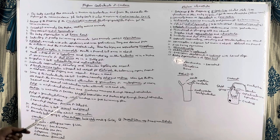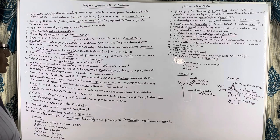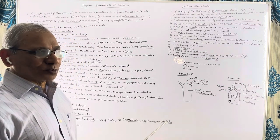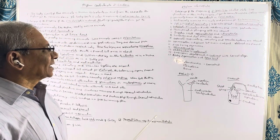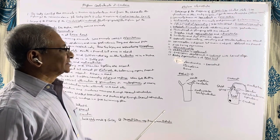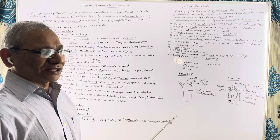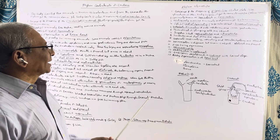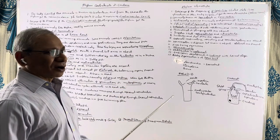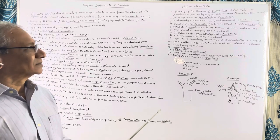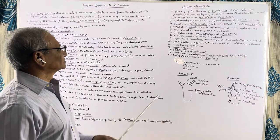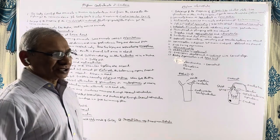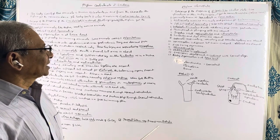Now coming to Phylum Ctenophora. 'Cteno' means comb — these animals have eight external comb-like ciliated plates on their body surface, giving the phylum its name Ctenophora. All these animals are exclusively marine. They are commonly known as sea walnuts or comb jellies.